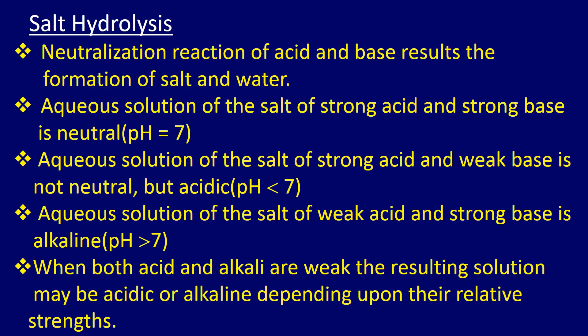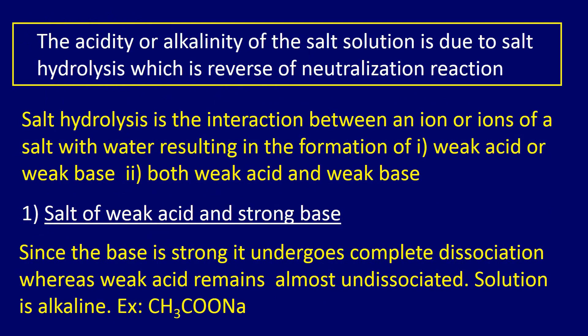But the aqueous solution of a salt of strong acid and weak base is not neutral — it is acidic, with pH less than 7. Example: ammonium chloride. Similarly, the aqueous solution of a salt of weak acid and strong base, for example sodium acetate, is alkaline with pH greater than 7. When both the acid and alkali are weak, the resulting solution may be acidic or alkaline depending upon their relative strength.